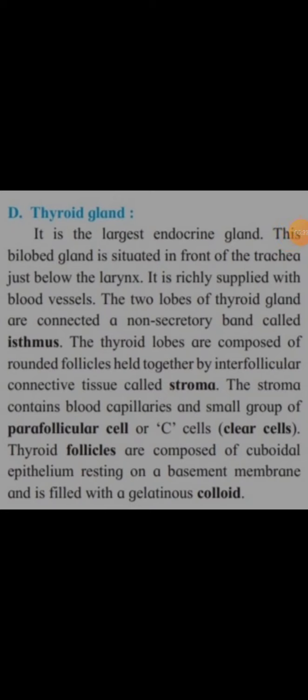The thyroid is the largest endocrine gland. It has a bi-lobed structure and is situated in the front of the trachea just below the larynx. It is richly supplied with blood vessels, and the two lobes are connected by a non-secretory structure called the isthmus. The lobes are composed of round follicles held together by interfollicular connective tissue called the stroma, which contains blood capillaries and small groups of parafollicular cells, also called C-cells or clear cells. The thyroid follicles are composed of cuboidal epithelium resting on a basement membrane and are filled with gelatinous colloid.